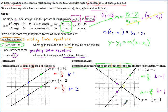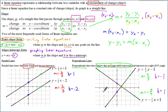For the negative slope, you can treat the negative as part of the numerator or denominator. If it's in the numerator, you go down 3, right 4. If you put the negative in the denominator, you'd go up 3, left 4. Either way, you trace the same line.